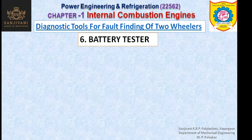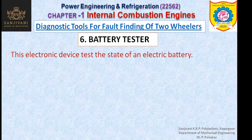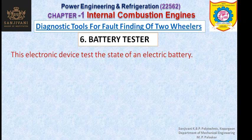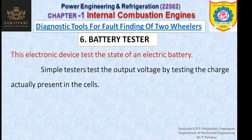The last device is the battery tester. We also use the battery tester as a diagnostic tool for fault finding of two-wheelers. This electronic device tests the state of an electric battery — what is the condition of the battery. When we go on using the electric battery, the capacity of the battery to store the charge and provide the required output voltage decreases. It is necessary to test the battery and test the condition of the battery. This battery tester is an electronic device which will test the condition of the electric battery. There are also simple testers to test the output voltage by testing the charge actually present in the cells.